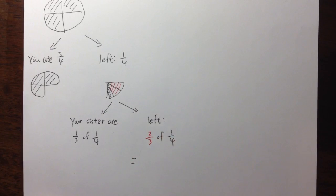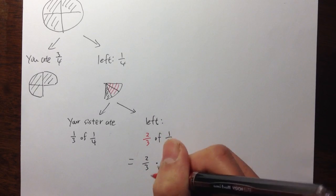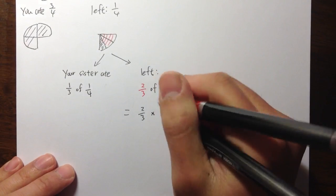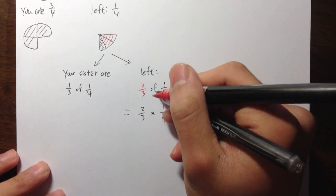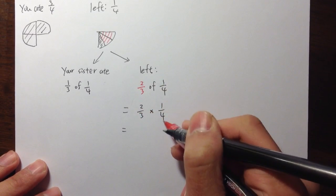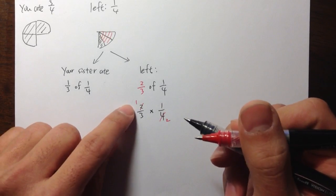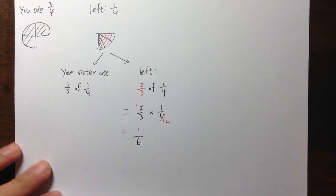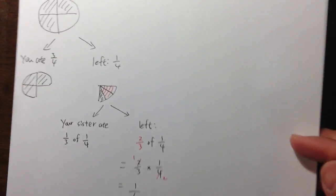So we just need to do the calculation. Two thirds of one quarter — the word 'of' means we multiply. We have two thirds times one over four. When we are multiplying fractions, we can first cross-cancel. Notice the two and the four can be reduced: two goes into two once, and two goes into four twice. Then we do the top: one times one is one, over three times two is six. So the answer is one sixth of the original.